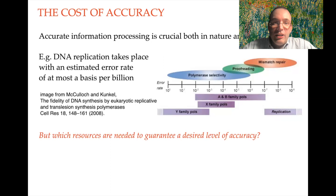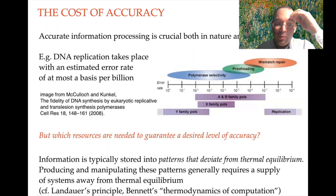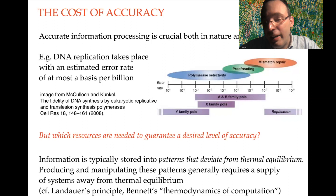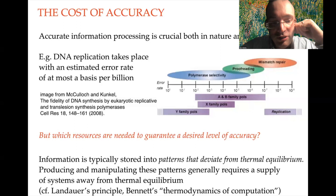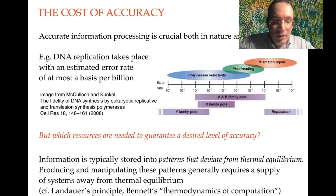The question is: how can a machine achieve this high level of accuracy, this level of precision in copying information or in doing any type of processing of information? If we think about which kind of physical resources are required to be accurate, we will soon realize that the important resource is to be away from thermal equilibrium.